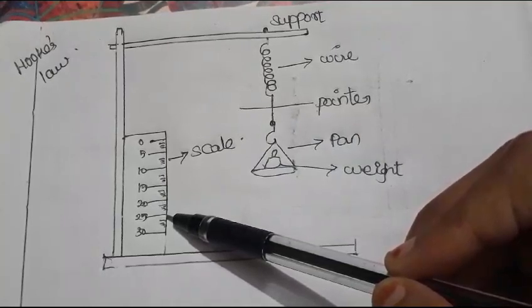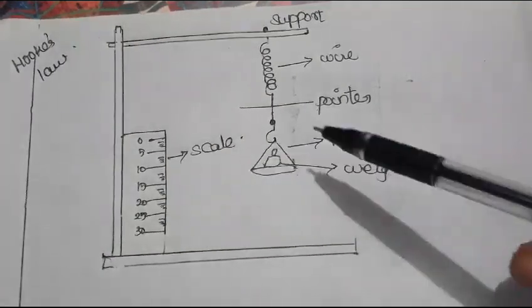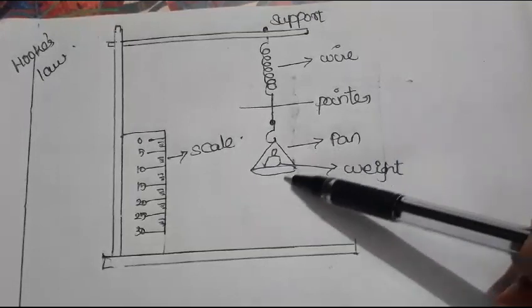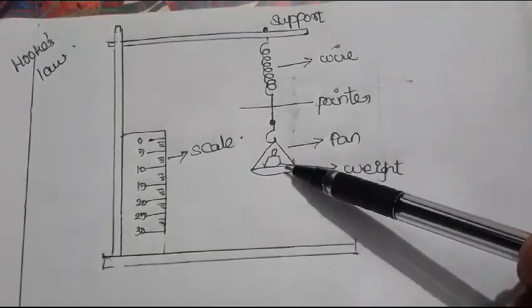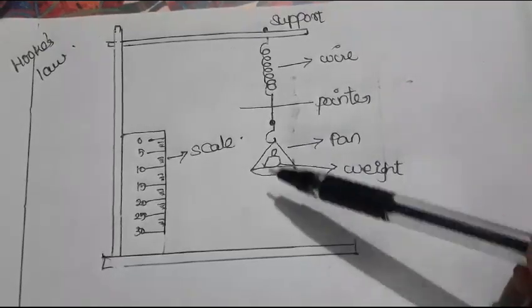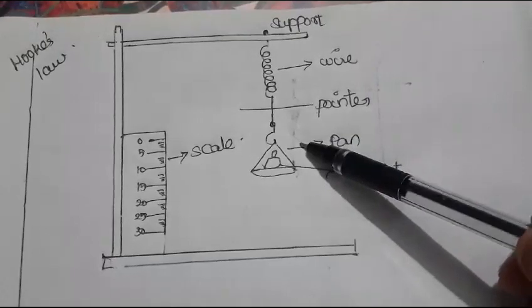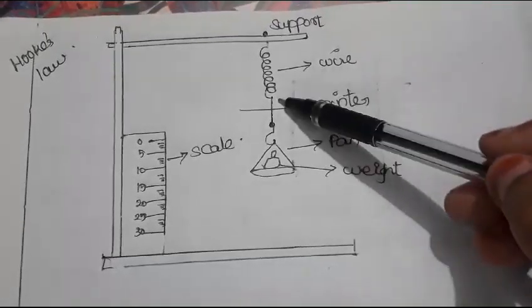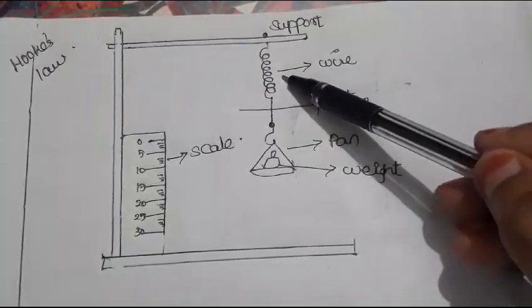The experiment shows that for a given load, the corresponding stretching force F and the elongation produced on the wire is del L. Load is added to the pan, and the extension produced, del L, is recorded.